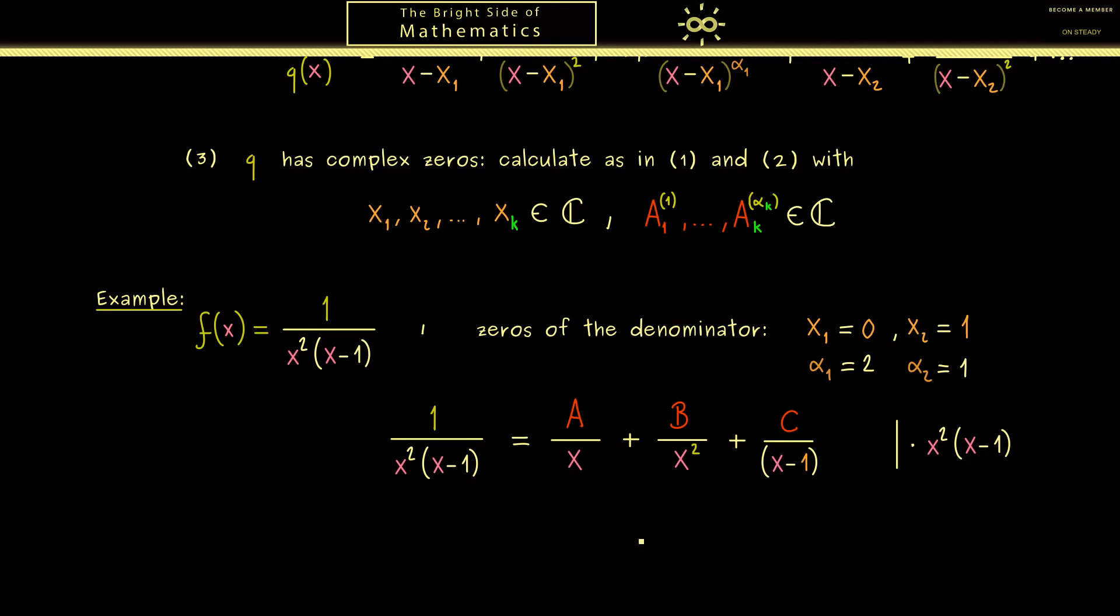For example here in the first part one x will cancel. Then in the second part x² will cancel. And finally in the last part only x² remains.